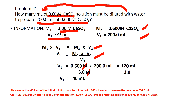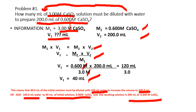120 mL divided by 3 gives you 40 milliliters. So 40 milliliters of the initial solution must be diluted with 160 mL of water to increase the volume to 200 milliliters. In other words, add 160 mL of water to 40 mL of 3 molar calcium sulfate, and the resulting solution after dilution is 200 mL of 0.6 molar calcium sulfate.